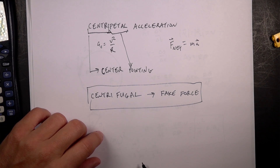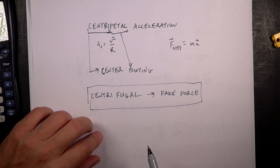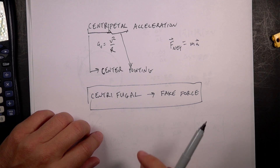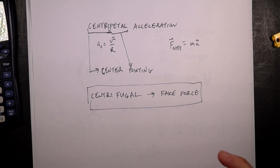That's how you derive the magnitude of the acceleration for an object moving in a circle. We call that centripetal acceleration.